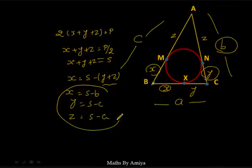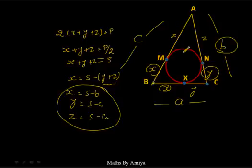The second concept: if we have a triangle and need to find BM, then BM = S − B (semi-perimeter minus the opposite side). This is the concept when working with the incircle of a triangle. Remember MPT first, and second is this S minus formula.